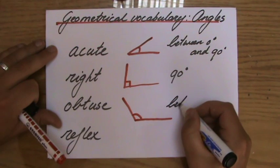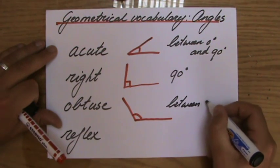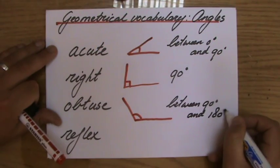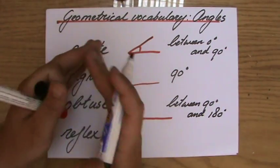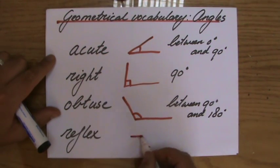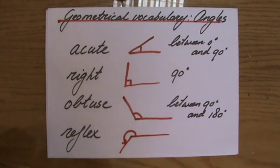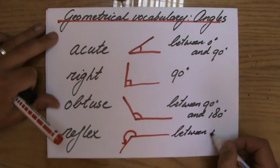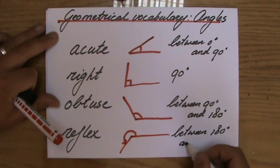The last one is a reflex angle. A reflex angle goes beyond the straight line, and that is an angle between 180 degrees and a full turn, which is 360 degrees.